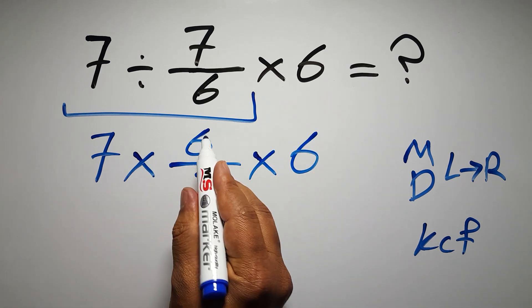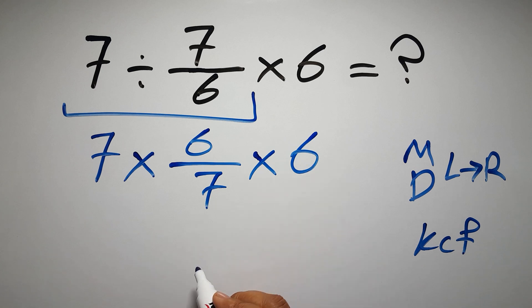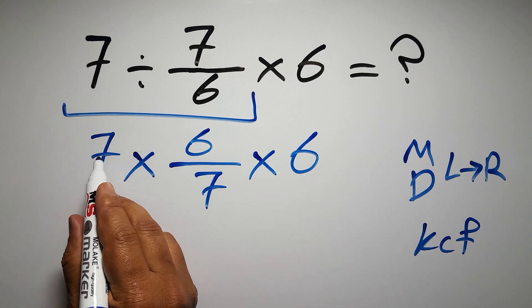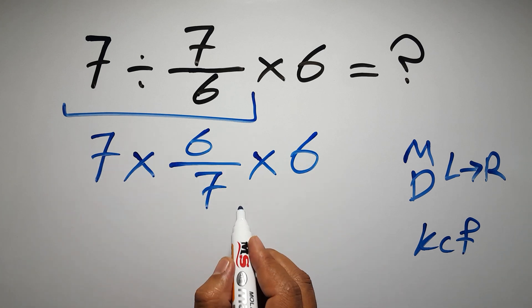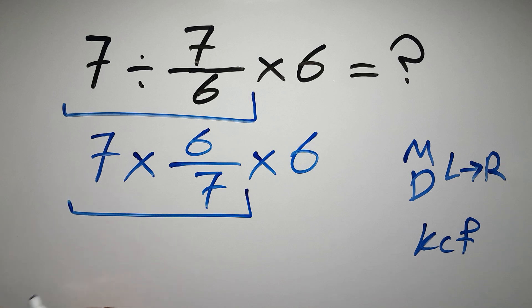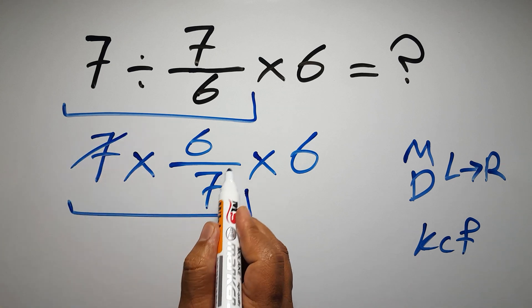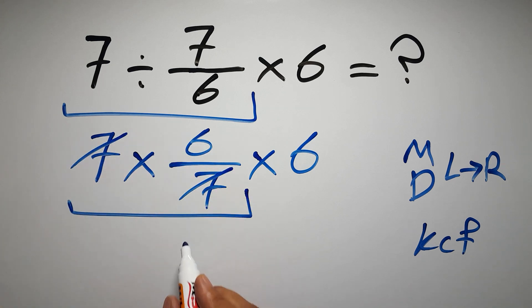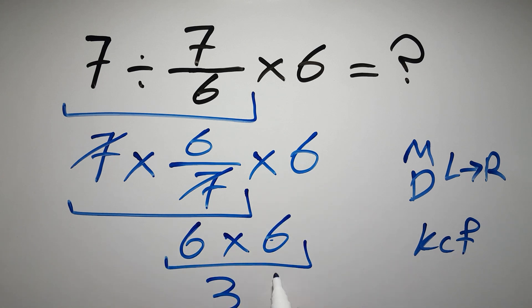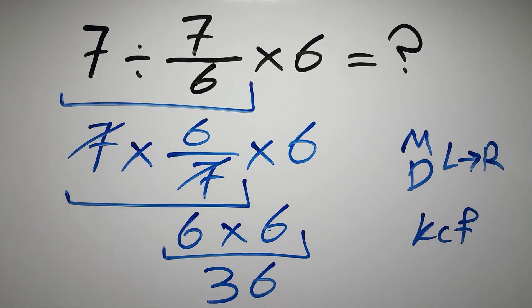7 times 6 over 7 times 6. First, 7 times 6 over 7. We can easily cancel this 7 and this 7, so we have just 6. And 6 times 6 gives us 36, and this is our final answer.